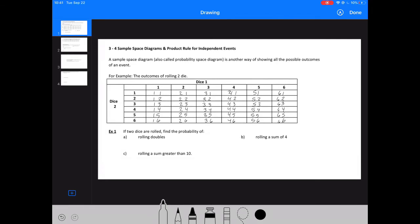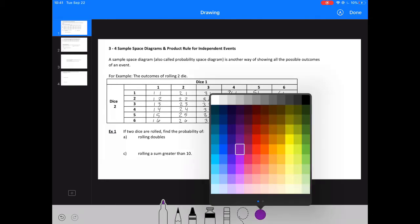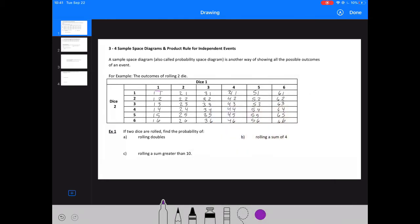I have two dice to roll to find the probability of rolling doubles. So let's circle those here. So where are my doubles? So 1, 1, 2, 2, 3, 3, 4, 4, 5, 5, and 6, 6. So my probability of rolling doubles would be 6 over 36 or 1, 6.